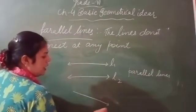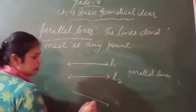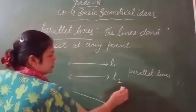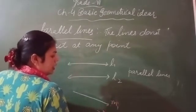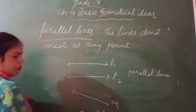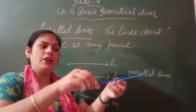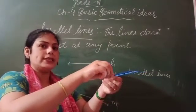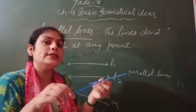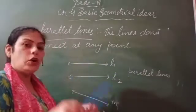But these and these are not parallel lines. Because when we extend them, they may not meet here, but when we extend further, somewhere they will meet. So these are intersecting lines, not parallel lines.